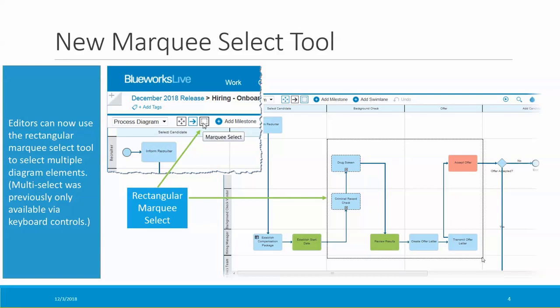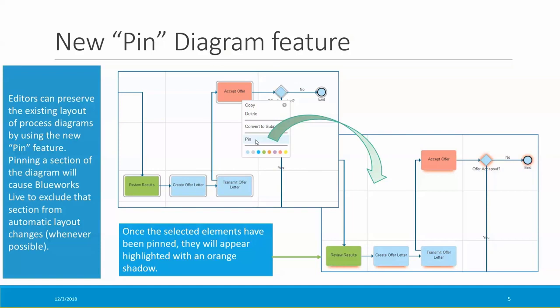By pinning a section of the diagram, you can preserve the layout of elements in that section. Pinning will cause BlueWorks Live to exclude that section from automatic layout changes whenever possible. Once you've selected the elements you want to pin — here I've selected four activities, a gateway, and an end event, highlighted with a gray outline — if I right-click on the selection, I see a new Pin menu option. If I choose to pin my selection, those elements will be highlighted with an orange shadow. When the diagram is updated, those pinned elements won't be rearranged.